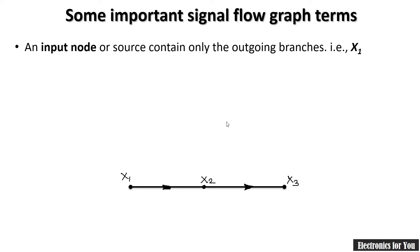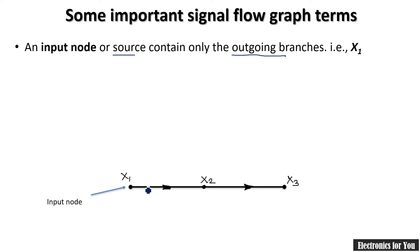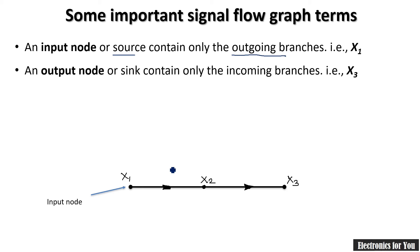There are important terms related to signal flow graph. First is the input node, also known as the source — it contains only outgoing branches. In the signal flow graph, x1 has only an outgoing branch, so x1 is called the input node. The output node is also called the sink — it contains only incoming branches. In the case of x3, there are only incoming branches, so x3 is the output node.